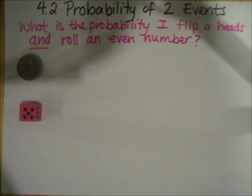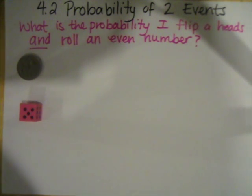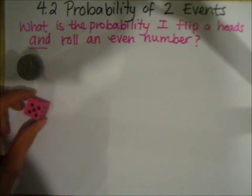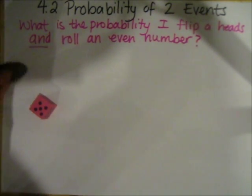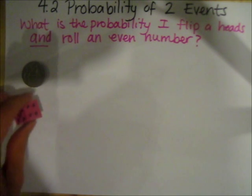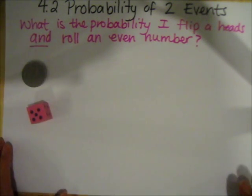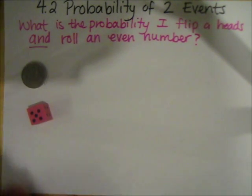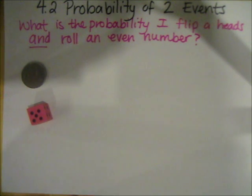In this video we're going to take a look at the probability of more than one event occurring. We're going to start by looking at what happens when we flip a coin and then roll a dice. The question says: what is the probability I flip a heads and roll an even number?